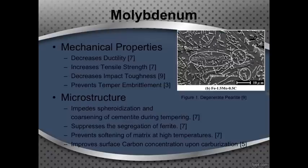The next element I'd like to talk about is molybdenum. Molybdenum is a very versatile element that affects several mechanical properties. It decreases ductility and impact toughness while increasing tensile strength. It also has some effect at preventing the temper embrittlement process. Microstructurally, similar to chromium, it impedes the spheroidization and coarsening of cementite during tempering, suppresses the segregation of ferrite, and prevents softening of the matrix during high temperature processes like annealing. Molybdenum also helps with carbon diffusing to the surface when carburizing, making it easier to achieve a carburized case.